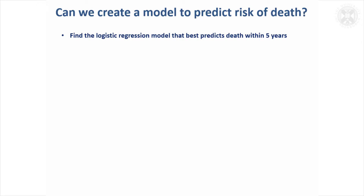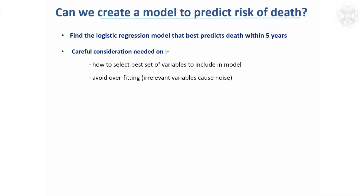That was teasing out the effects of smoking and age, but there were a lot of other things measured. One thing we might want to do is create a model to predict the risk of death based on all these other factors. But we need to consider that carefully — you've got lots of variables, and throwing them all in could lead to overfitting and noise from irrelevant measurements.